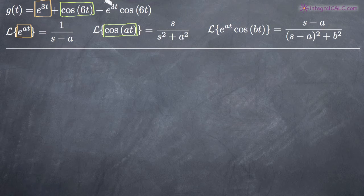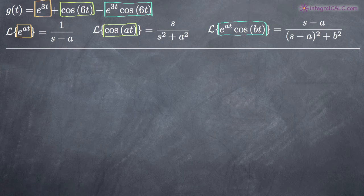Then we've got our last term here in our original function, e to the 3t cosine of 6t. And any Laplace transform table should also have this, e to the at cosine of bt where a and b are constants.